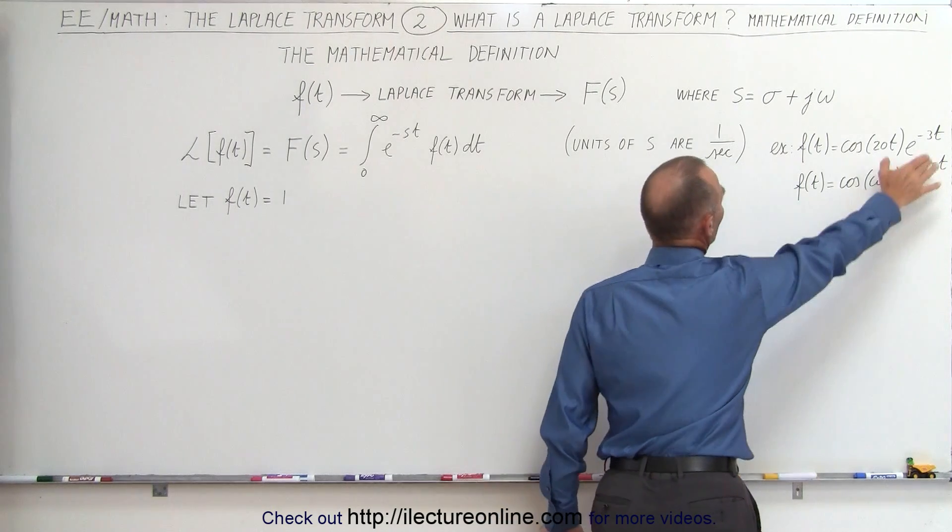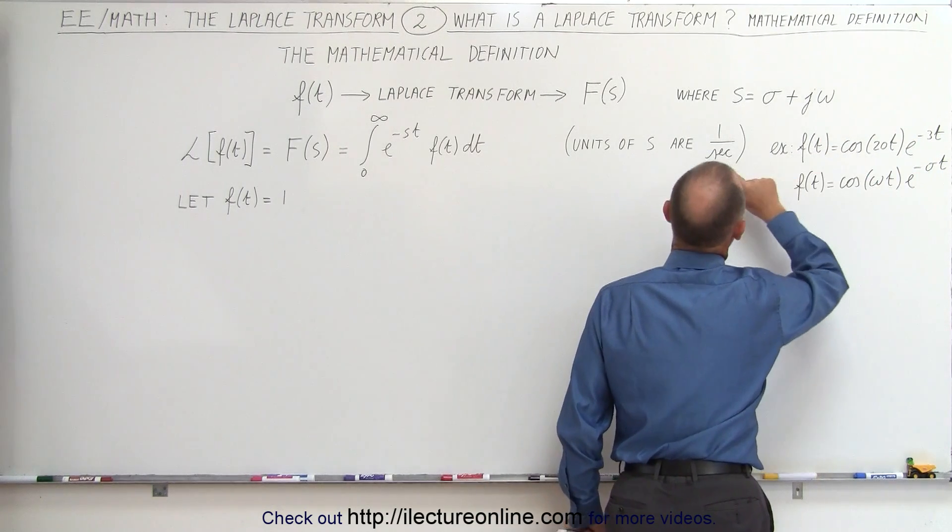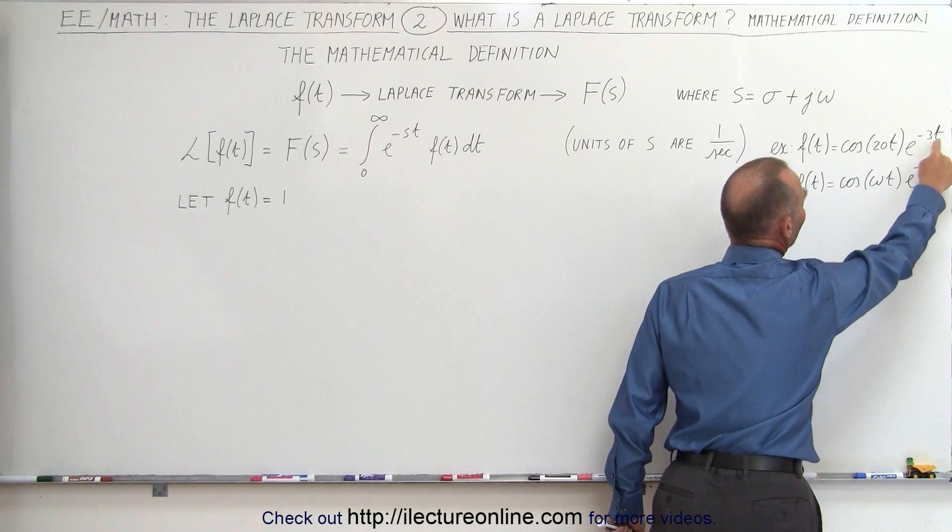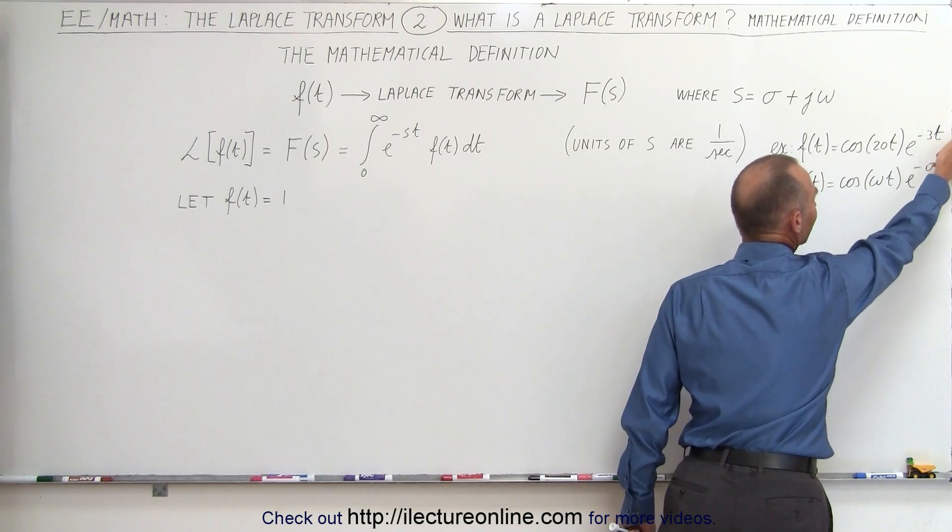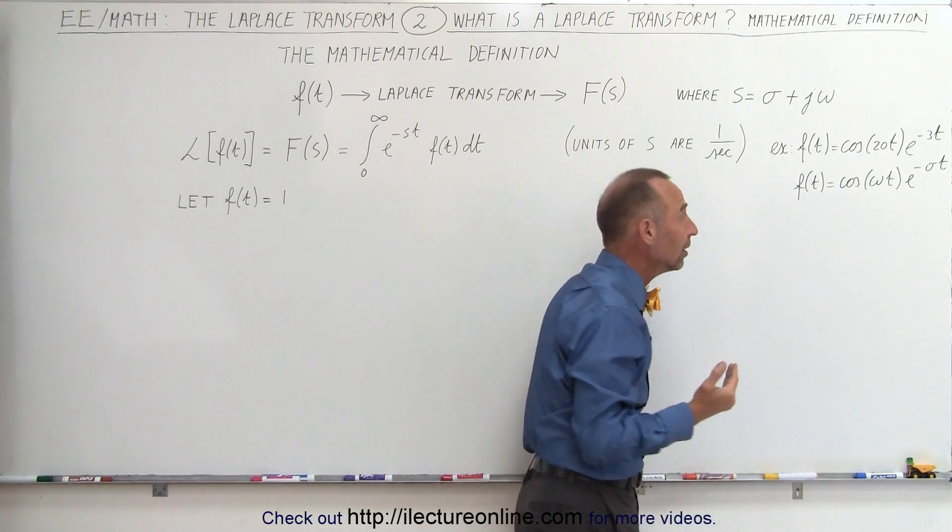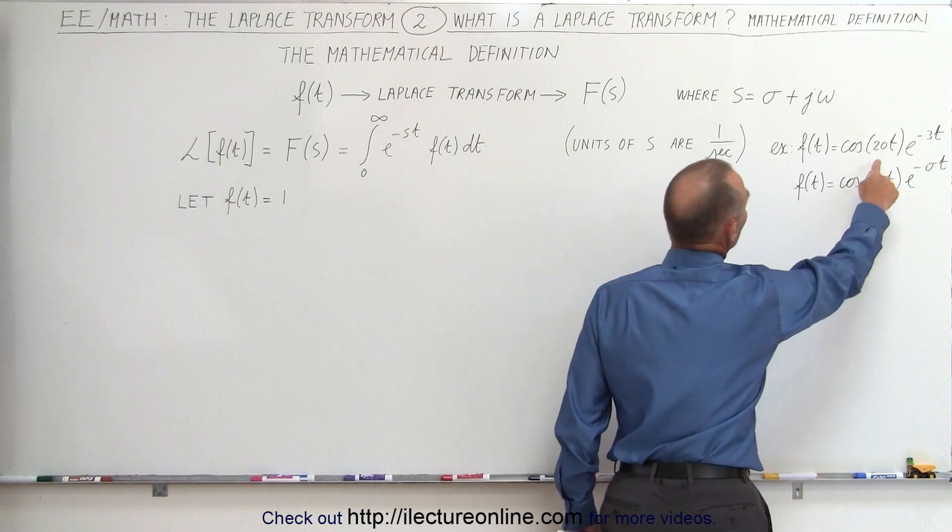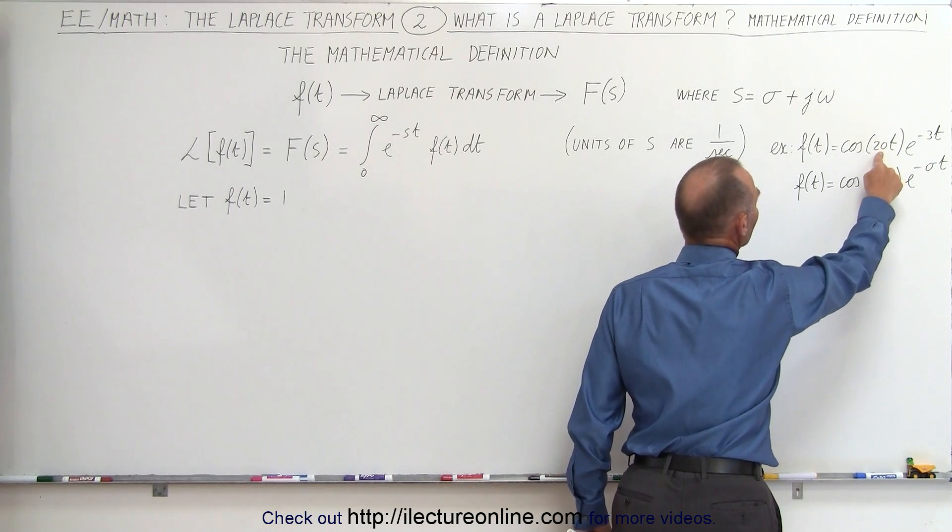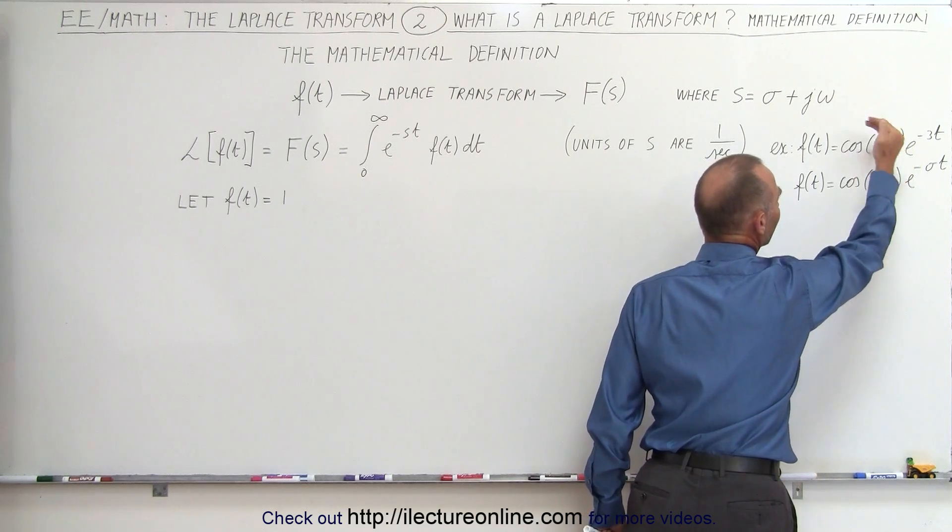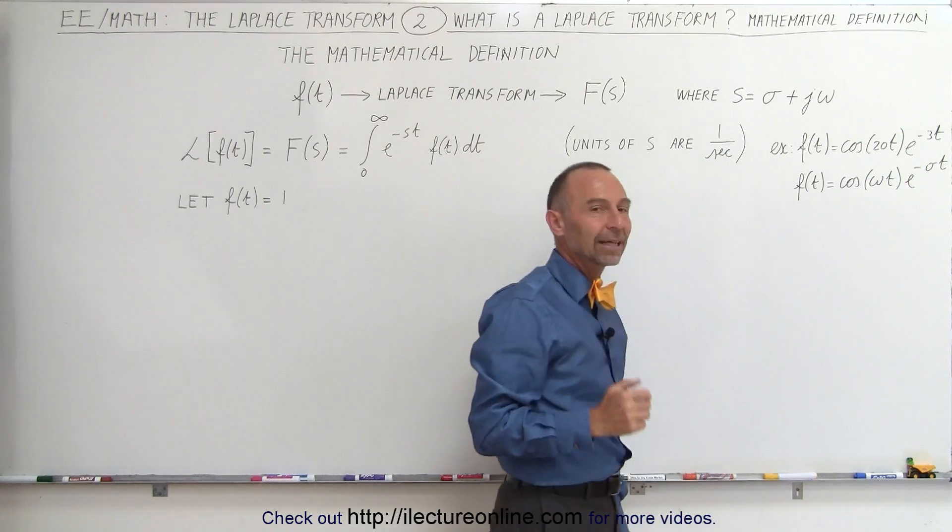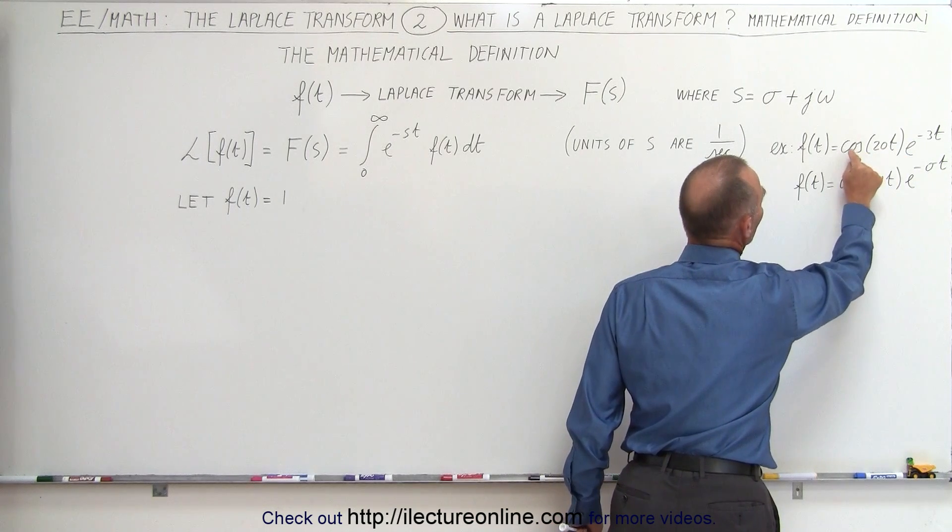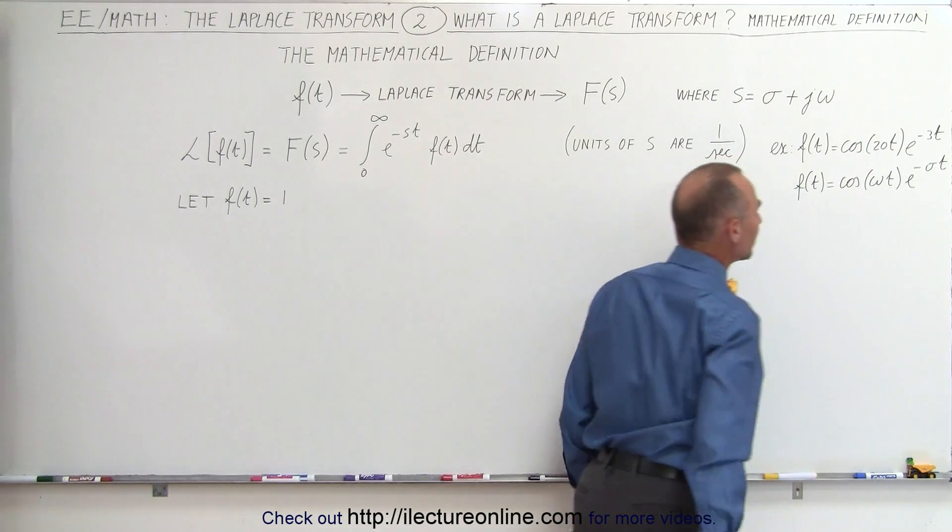Notice that in order for this to work out with units, 1 over seconds, if we plug in 3 over seconds times t in seconds, the seconds will cancel out, and this is a dimensionless quantity, which is what we want in the exponent. And if we put 1 over seconds here, because that's an omega, that is radians per second times t in seconds, that cancels out, and we have no units in here, because this needs to be the cosine of something in radians.